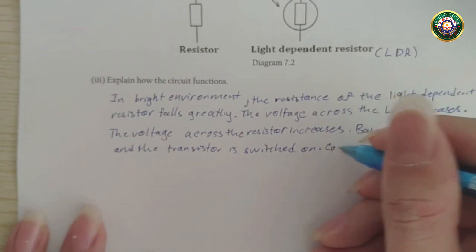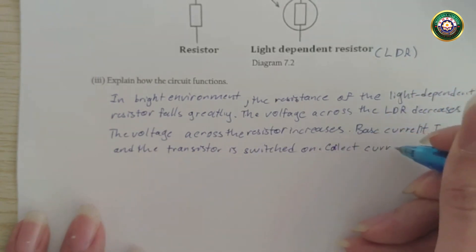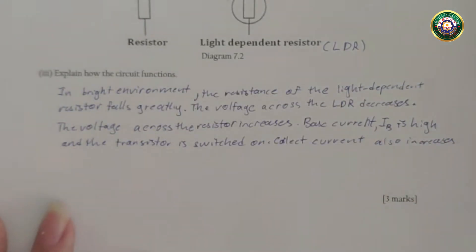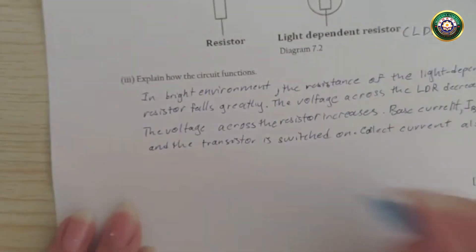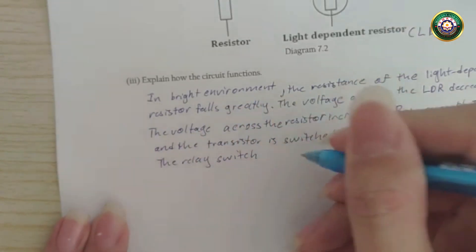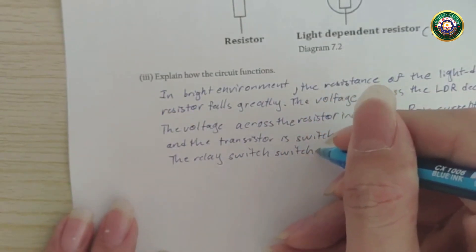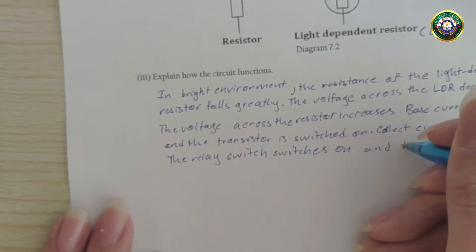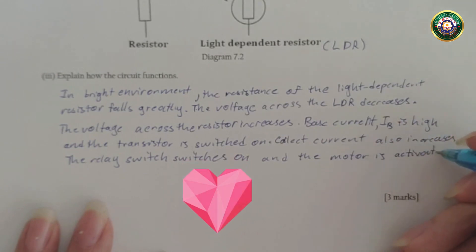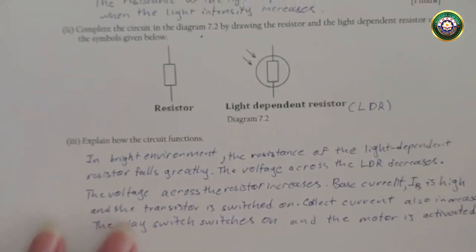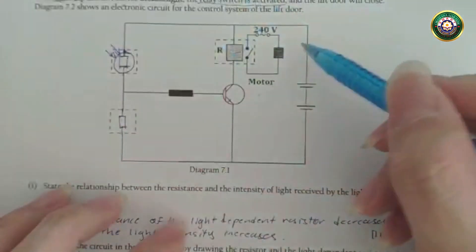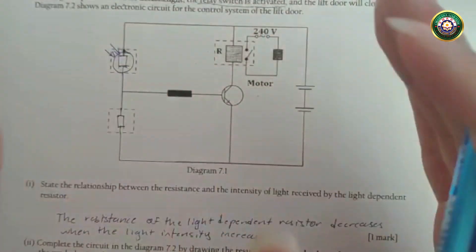Moreover, the collector current also increases. And finally, the relay switch switches on, and the motor is activated. So yeah, that's about it. Basically, when there's light, then this will be able to function. That's the whole point of this entire circuit.